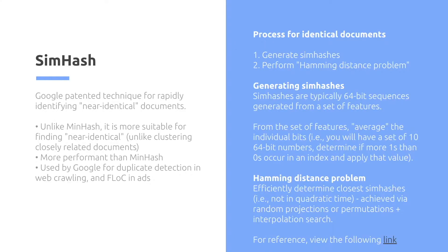SimHash is another one. So this is a Google patented technique for rapidly identifying near-identical documents. So unlike minhash, it's more simple for finding near-identical, so unlike clustering, which is more for closely related documents. Minhash is more appropriate to use also for documents that are kind of similar but not necessarily nearly identical.